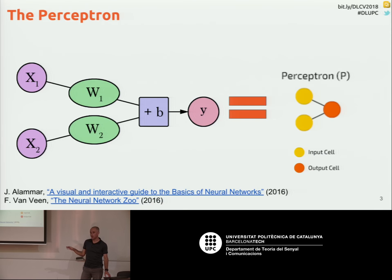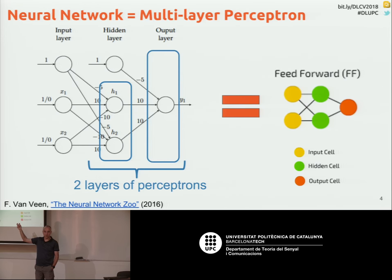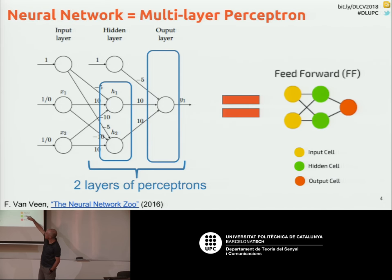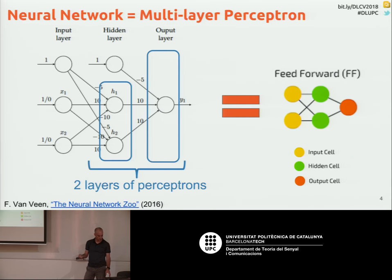With only one perceptron, there isn't much you can do in terms of estimating a function. In the end, neural networks are function estimators — that's all they are doing. With only one perceptron you cannot do much, but if you have more than one perceptron, things become more and more interesting. For example, two perceptrons allow you to model the XNOR function, which is non-linear. Just by combining two of them with the right parameters, you can implement more complex functions by combining different perceptrons.